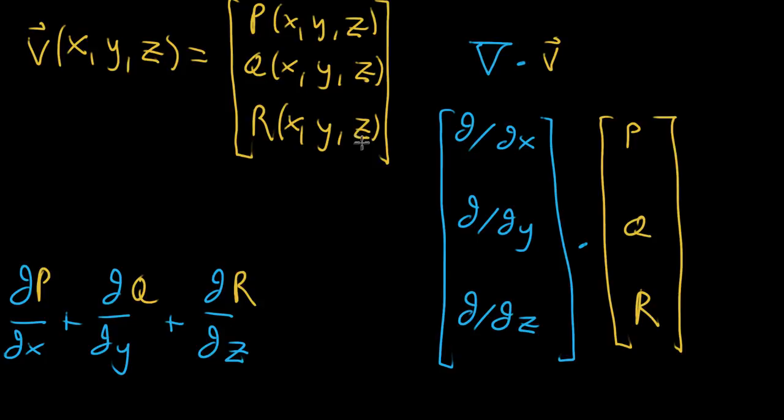And since I haven't talked about three-dimensional vector fields or three-dimensional divergence, this last term, maybe it's not a given that you'd have as strong an intuition for why this shows up in divergence as the other two, but it's actually quite similar. You're thinking about changes to the z component of a vector as the value z of the input, as you're kind of moving up and down in that direction changes.